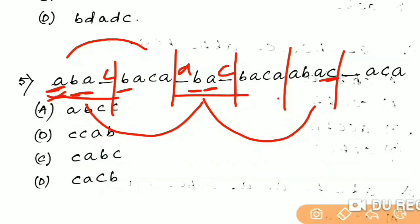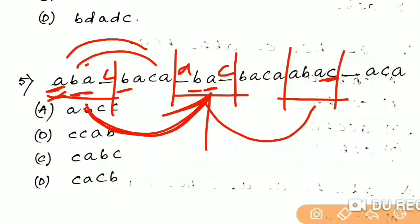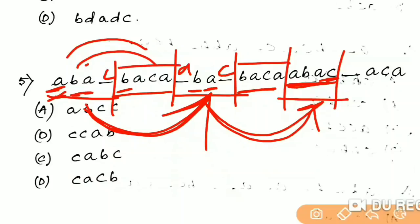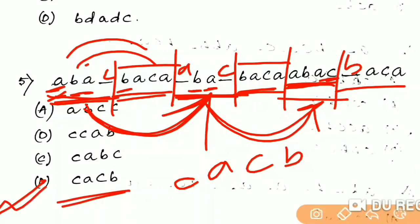So this is A, B, A, C, A, B, A, C, A, B, A, C. This is the first one; the second one is C. So this is C. Option D is the right answer.